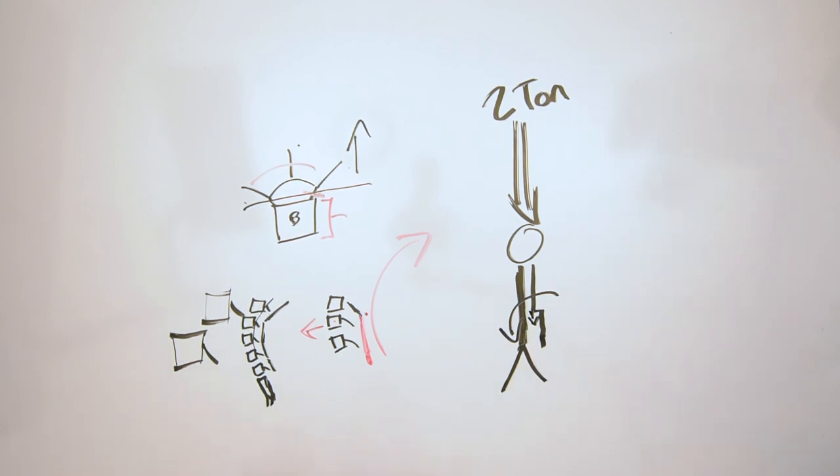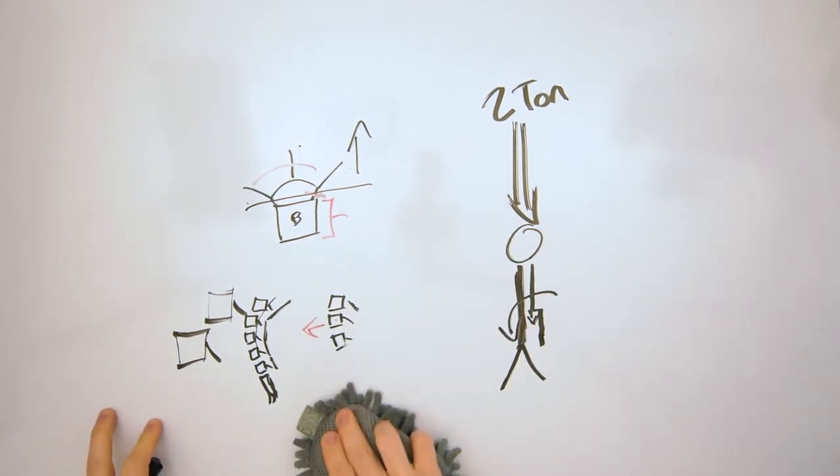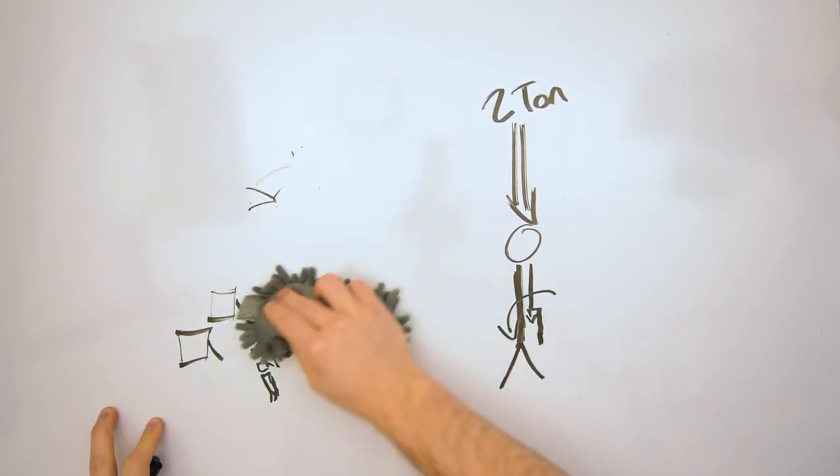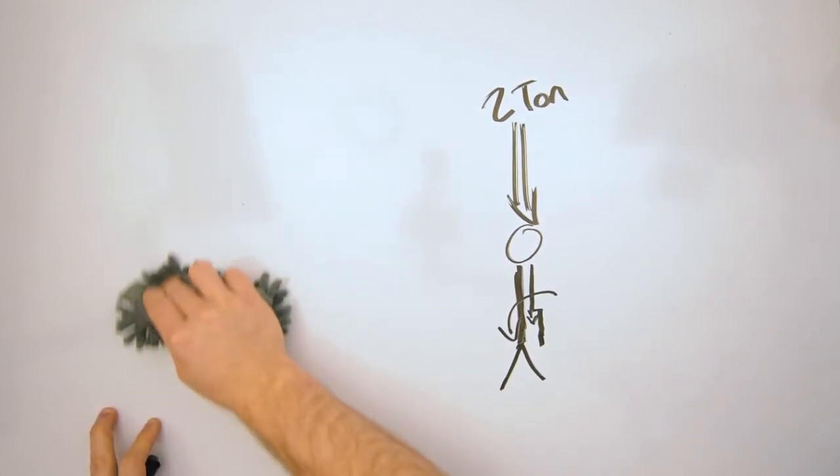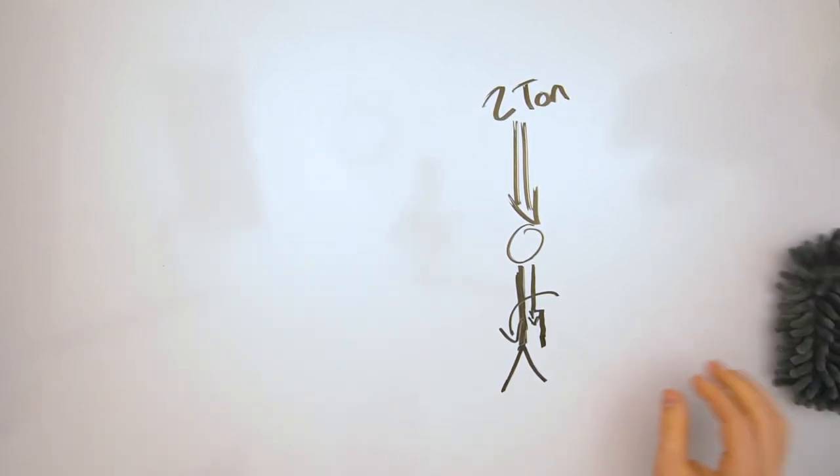So people with a spondylolisis and a spondylolisthesis might not deal with compressive loads quite as well. For those people, it is very important that they have abdominal tone. And that's what we're going to talk about next time.